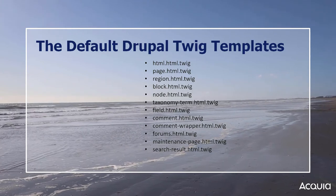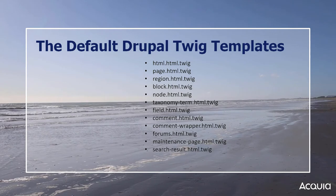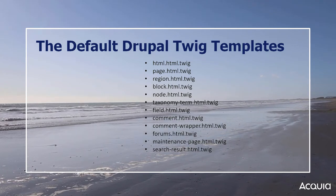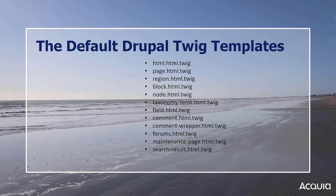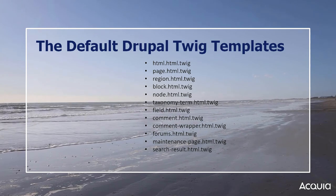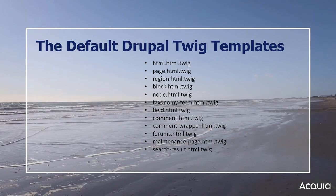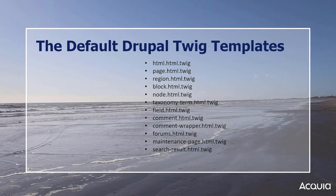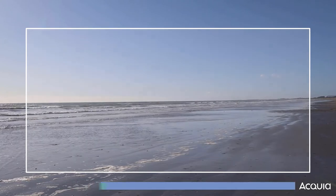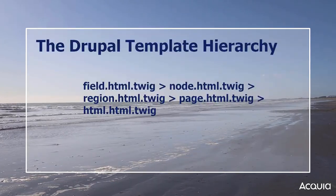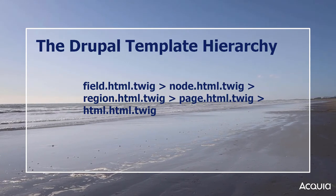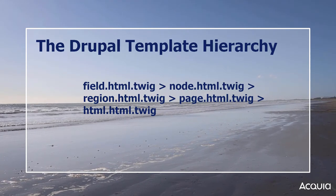To customize any of these templates, you need to override them with Twig files located in your custom theme's templates directory. There is a list of core Drupal templates that most commonly render content on your site. If you are using a downloaded Drupal module, it may also include its own Twig template files that you can theme. Drupal renders templates in a specific way — it renders the most specific template first, such as a field.html.twig file.